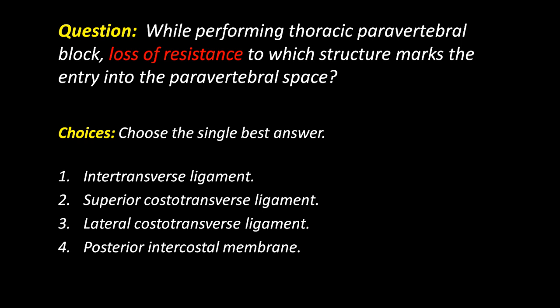The question was: while performing thoracic paravertebral block, loss of resistance to which structure marks the entry of the needle into the paravertebral space? The options given were the intertransverse ligament, the superior costal transverse ligament, lateral costal transverse ligament, and posterior intercostal membrane. The answer is superior costal transverse ligament.